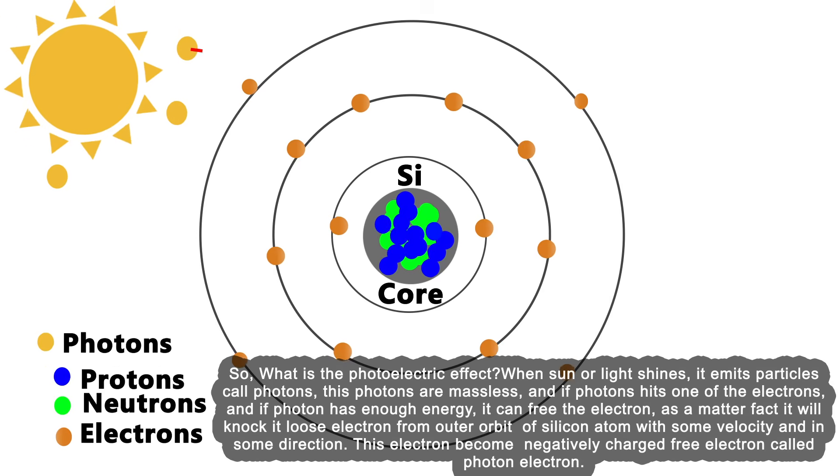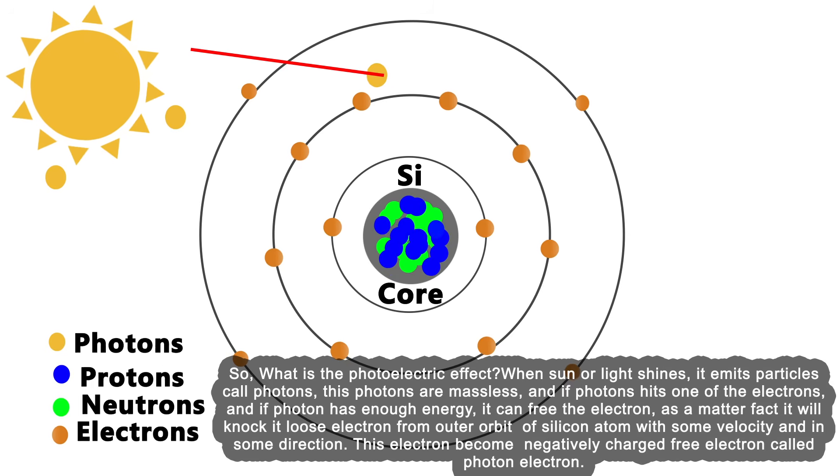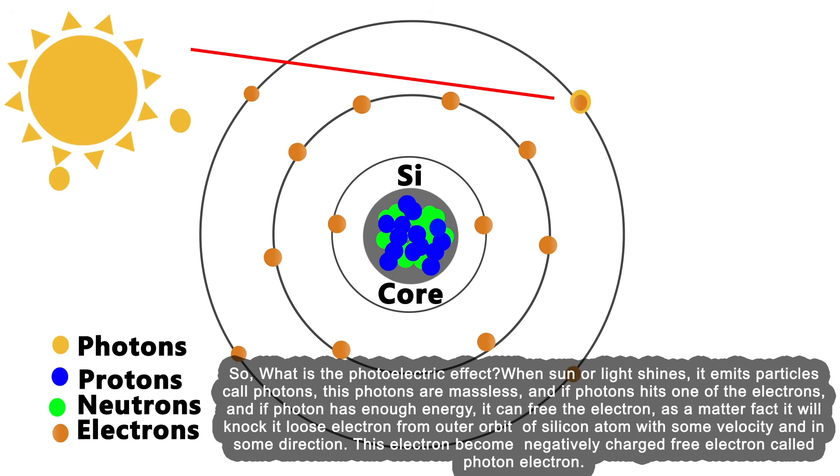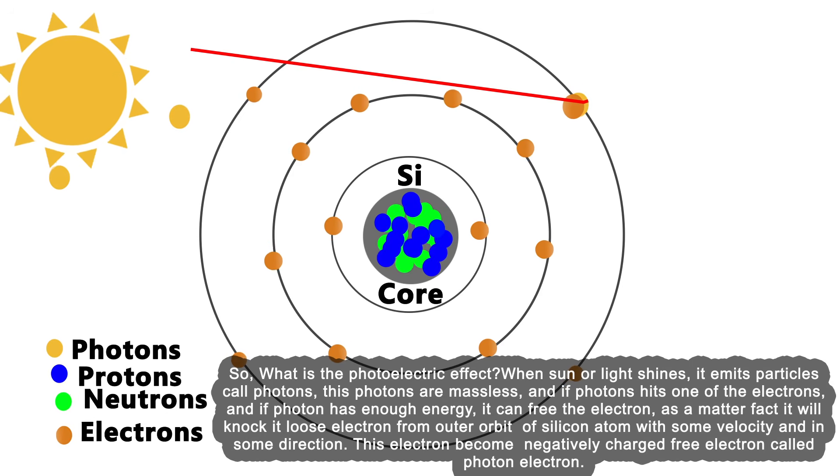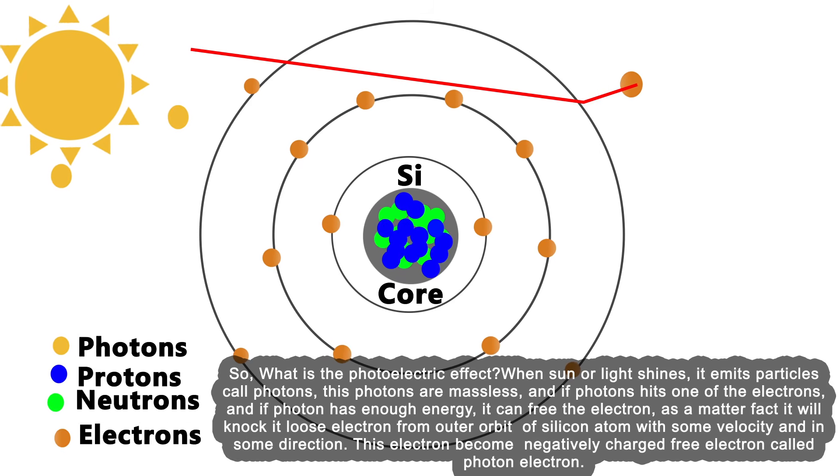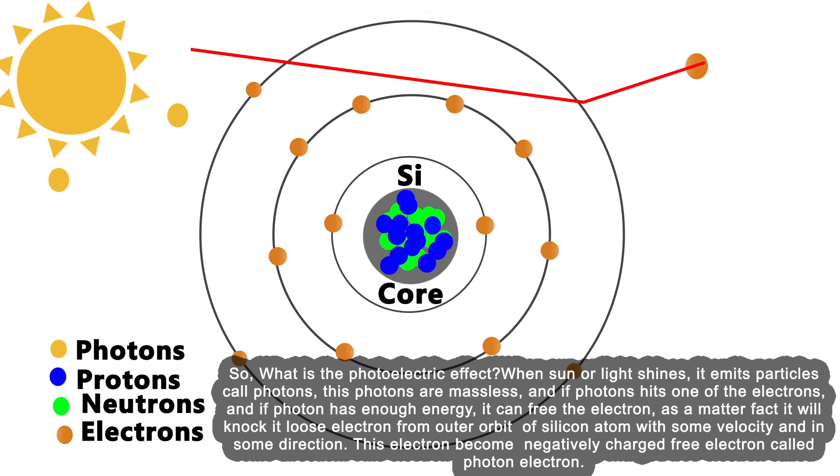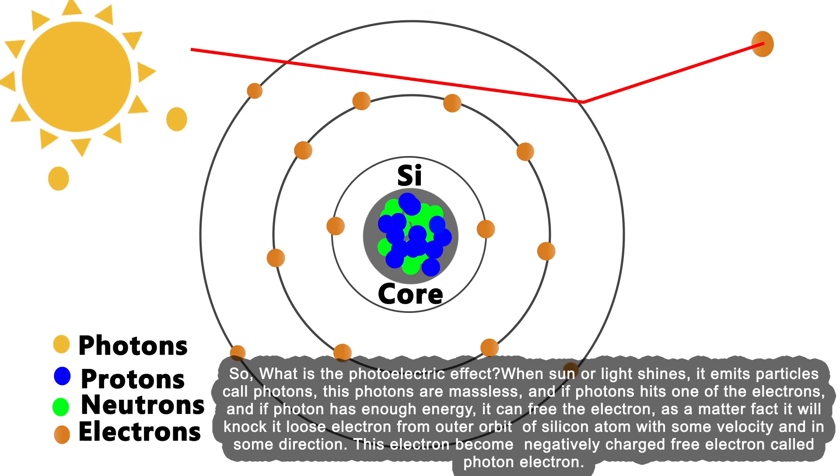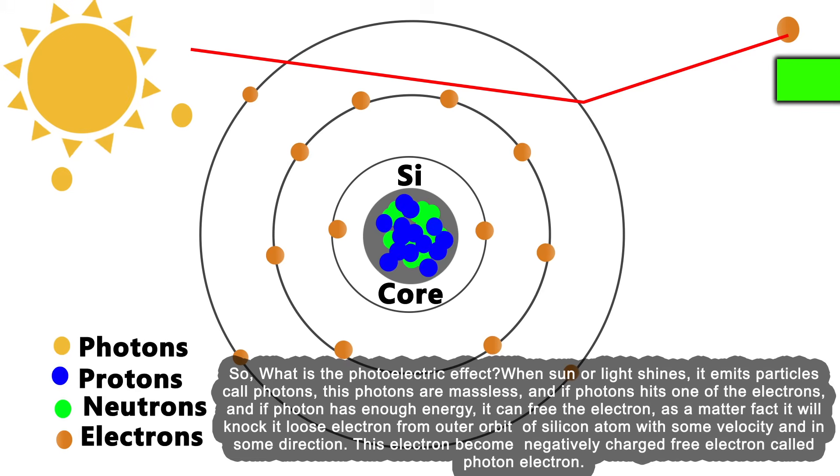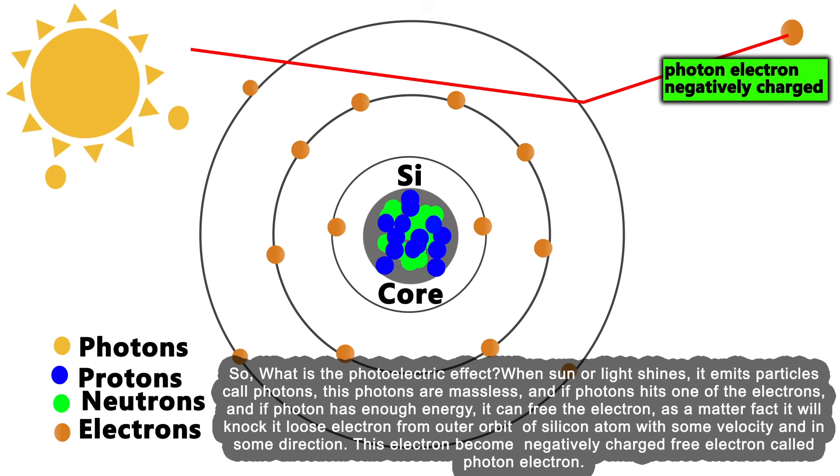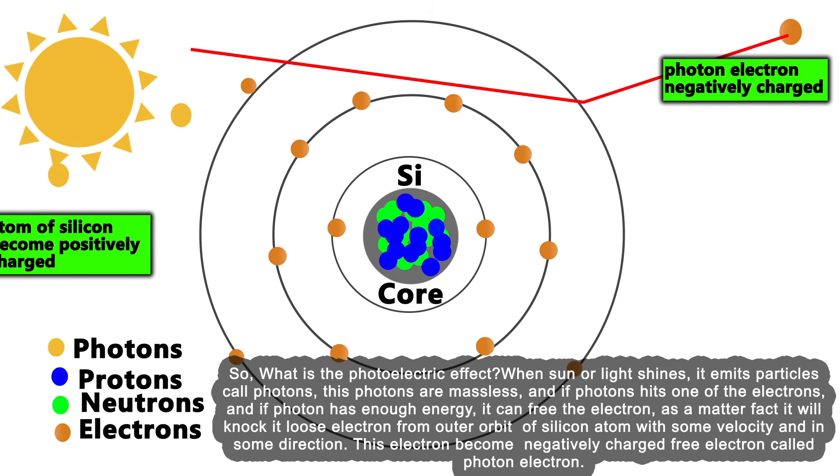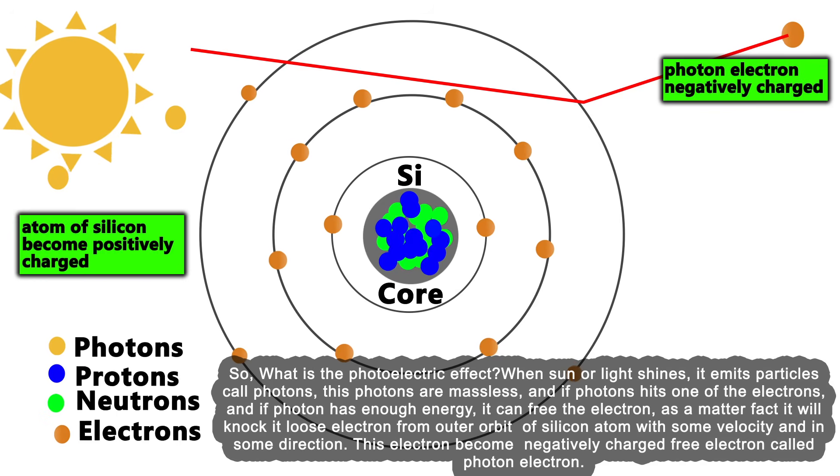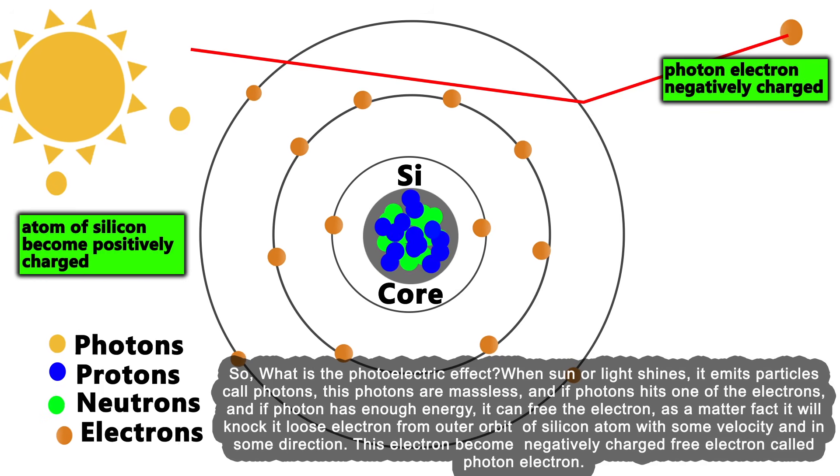So what is the photoelectric effect? When sun or light shines, it emits particles called photons. These photons are massless, and if a photon hits one of the electrons and has enough energy, it can free the electron. It will knock the electron loose from the outer orbit of the silicon atom with some velocity and direction. This electron becomes a negatively charged free electron called a photoelectron.